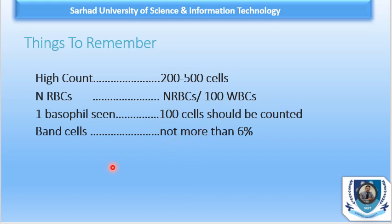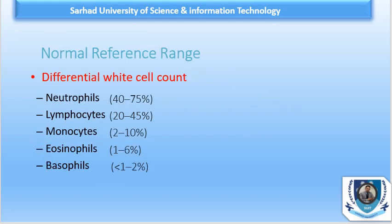Maturation stages are not normally seen in peripheral blood. Band forms can be seen in peripheral blood and, if recorded separately, these are normally not more than 6% of counted cells.